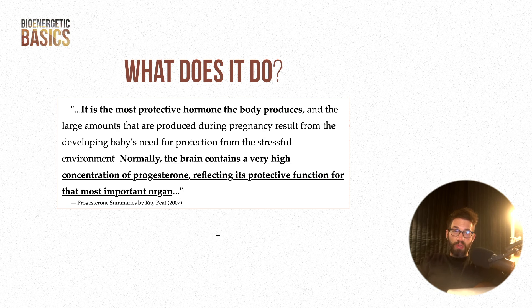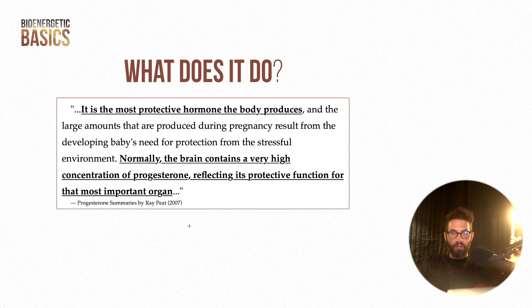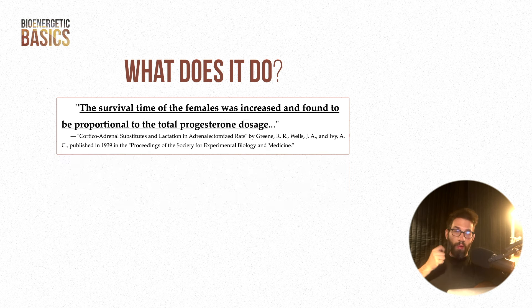This is from Progesterone Summaries by Ray Peat in 2007. Ray says: 'Progesterone is the most protective hormone the body produces. The large amounts produced during pregnancy result from the developing baby's need for protection from the stressful environment. Normally, the brain contains a very high concentration of progesterone, reflecting its protective function for the most important organ.'